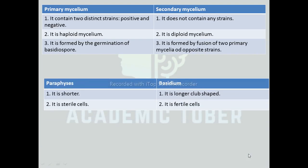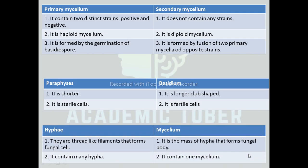Differences between paraphysis and basidium: Paraphysis is shorter, whereas basidium is longer and club-shaped. Paraphysis consists of sterile cells, whereas basidium consists of fertile cells. Difference between hyphae and mycelium: Hyphae are the thread-like filaments that form the fungal cell, whereas mycelium is the mass of hyphae that forms the fungal body. Each hypha contains one cell unit, whereas the mycelium is composed of many hyphae.